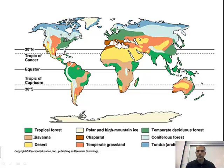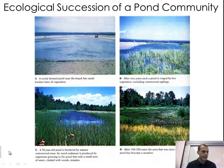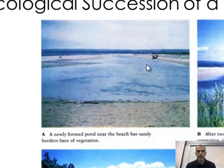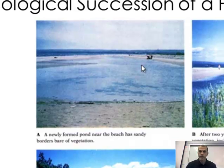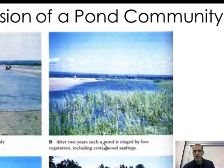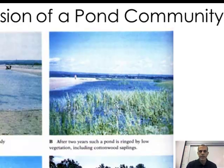Through evolutionary change, there's going to be some change that occurred until they got to this point. Looking at ecological succession here, this first picture shows basically a pond with sandy borders and not a whole lot of vegetation. Moving to letter B — after two years — you can see there's a lot of low vegetation, some cottonweed, and much less sand remaining.